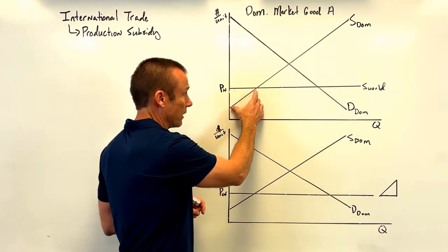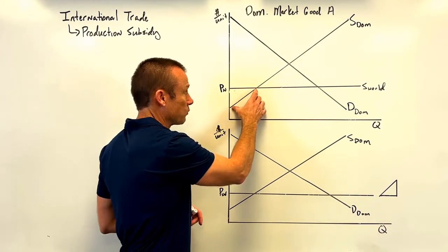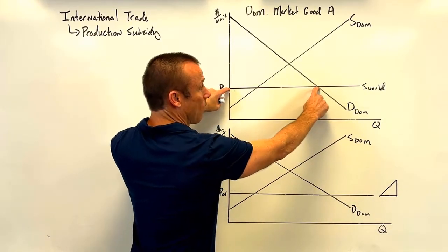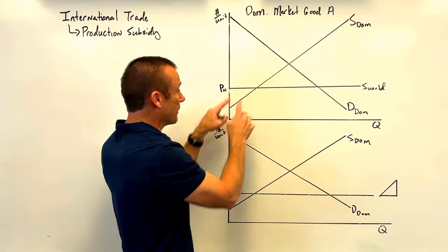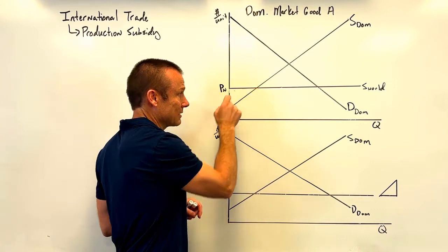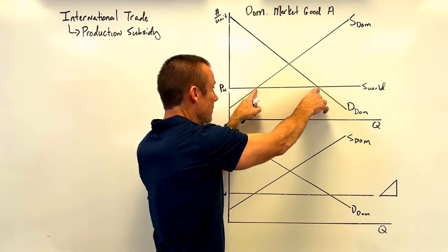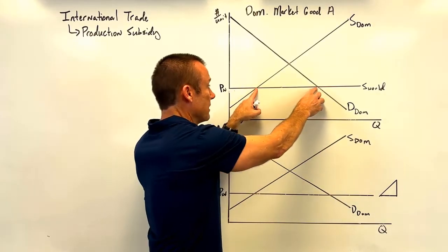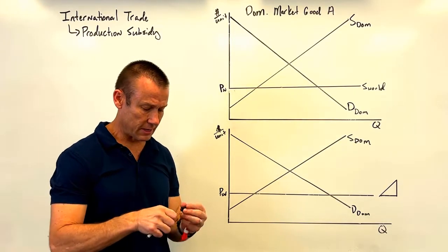A few domestic producers can produce at a lower cost per unit than price world, but not enough to satisfy all domestic demand. At price world, the quantity demanded domestically is greater than what domestic producers can supply, since those producers only have a marginal private cost below price world for a limited quantity. This gap is filled by goods produced internationally — these are the imports to this domestic market.